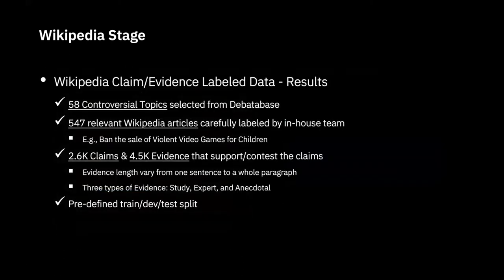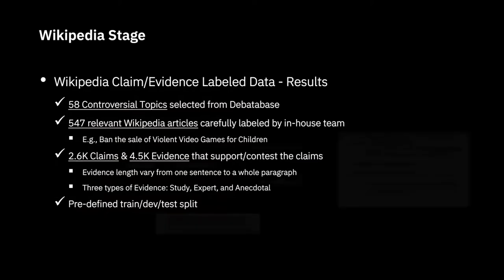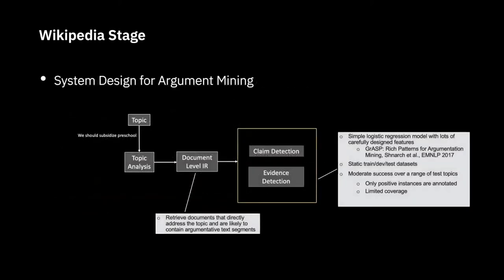Our Wikipedia dataset contains 58 motions or topics, around 600 related Wikipedia articles, 2K claims, and 4K evidences. Our system to retrieve or detect claims or evidence from Wikipedia articles works like this: given a topic, we first run topic analysis, so we know the main concept is 'preschool' and the action is 'subsidize.'